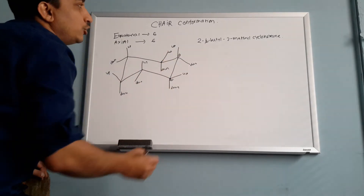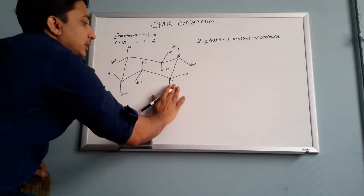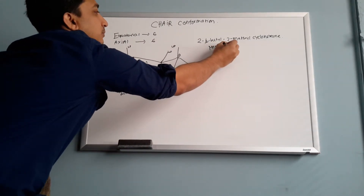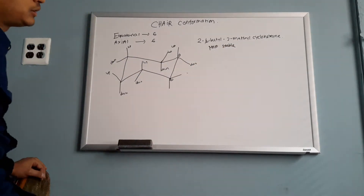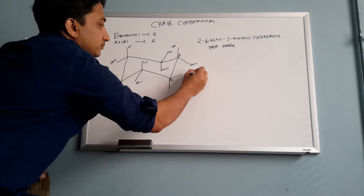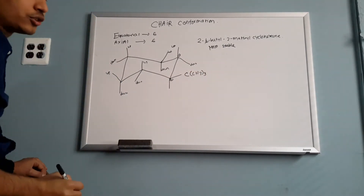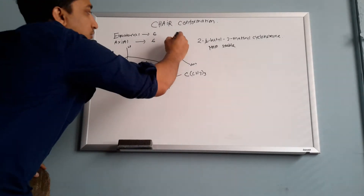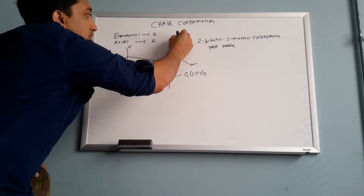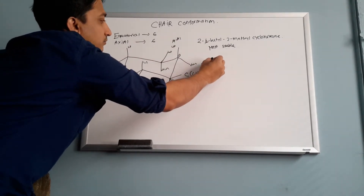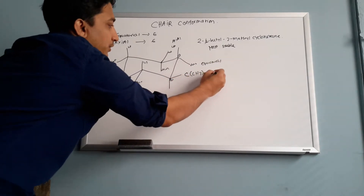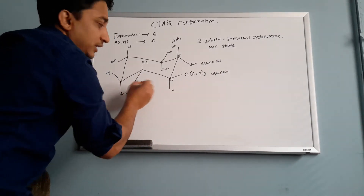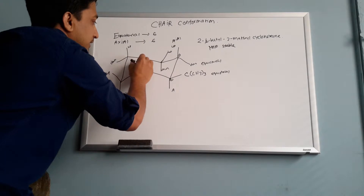So to draw the most stable conformation: this is position one, this is position two. At position two, you have a t-butyl group. For the most stable conformation, you put the t-butyl in the equatorial position. I'll draw for you — this one is axial, this one is equatorial.